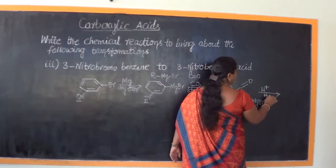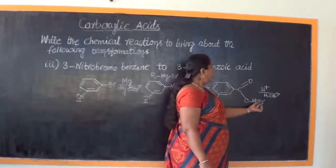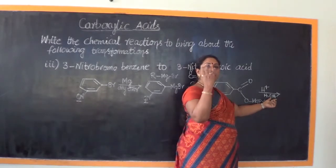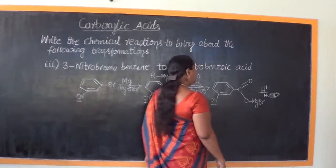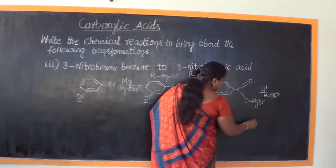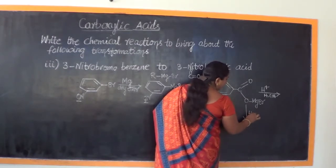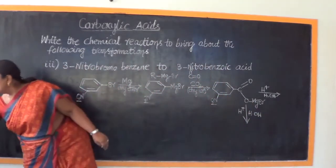We carry out acid hydrolysis. MgBr takes up the OH group and forms magnesium hydroxide bromide, while H takes up attachment with oxygen. This gives us the hydroxyl group on the carbonyl carbon, completing the carboxylic acid functional group — COOH.